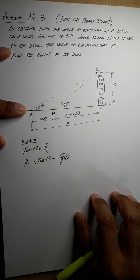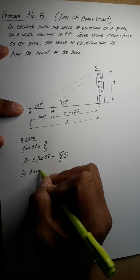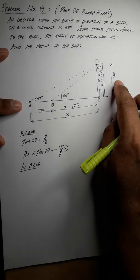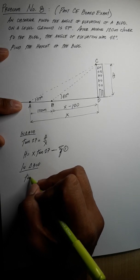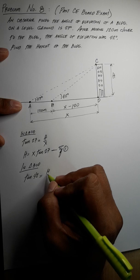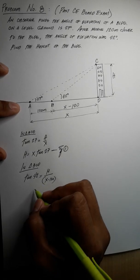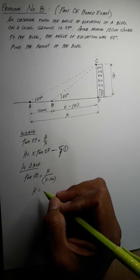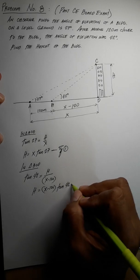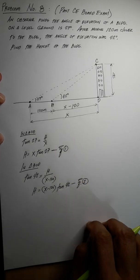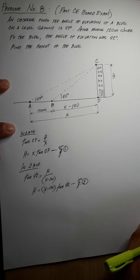In triangle BCD, we solve for the value of h. Tangent 42 equals h over (x minus 120), so h equals (x minus 120) times tangent 42. This will be our equation number two. We then equate equation one and equation two.